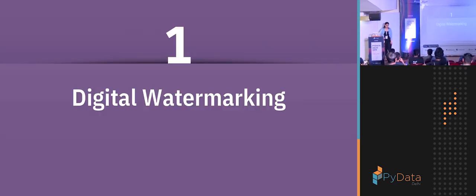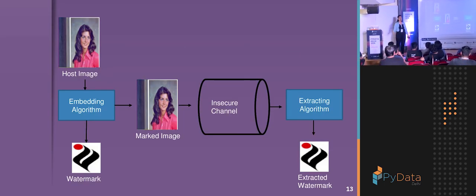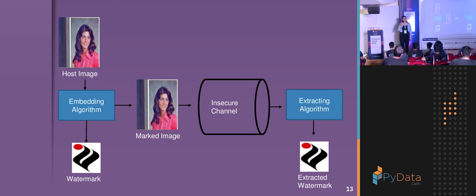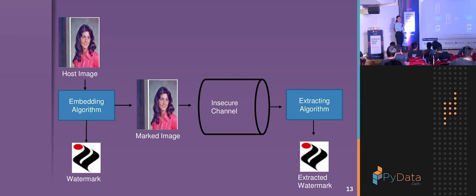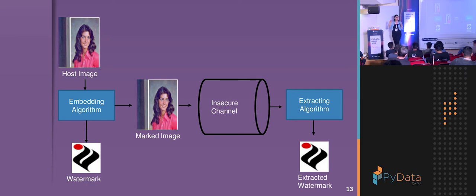In digital watermarking, you have a host image and devise an embedding algorithm. The watermark can be visible — as seen on TV channels — or invisible, depending on the requirement. Using the embedding algorithm, I embed the watermark into the host image, creating a marked image in which the watermark is embedded, and then it is sent through an insecure channel. The extraction algorithm, which is the reverse of the embedding algorithm, is used to extract the watermark. If we can extract the watermark as it was, the image is likely not tampered.